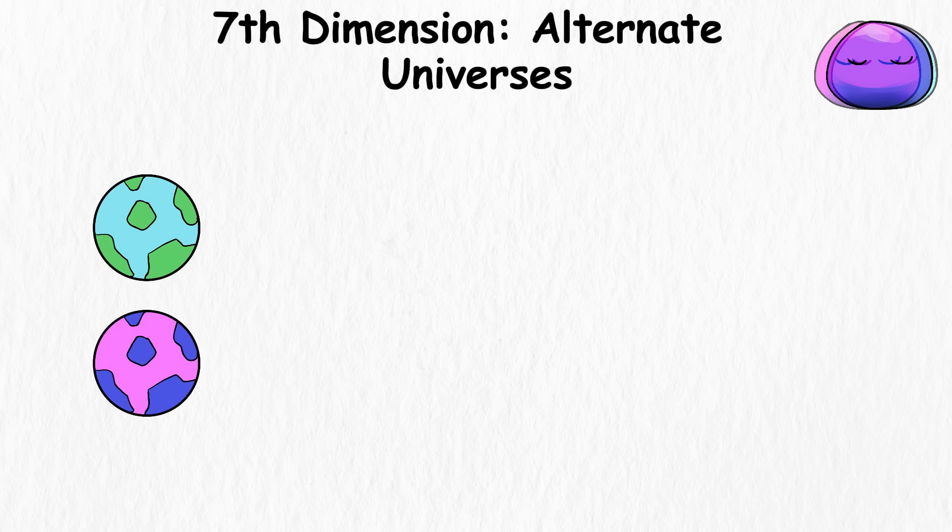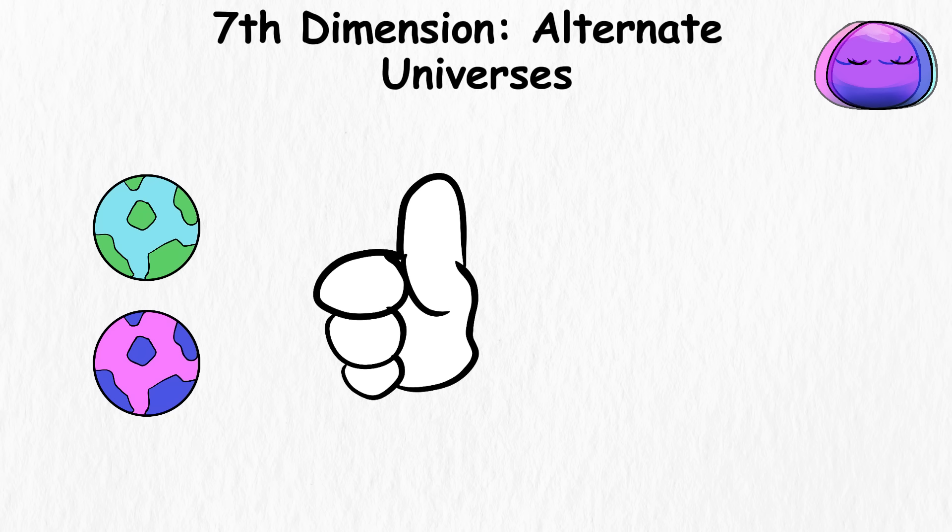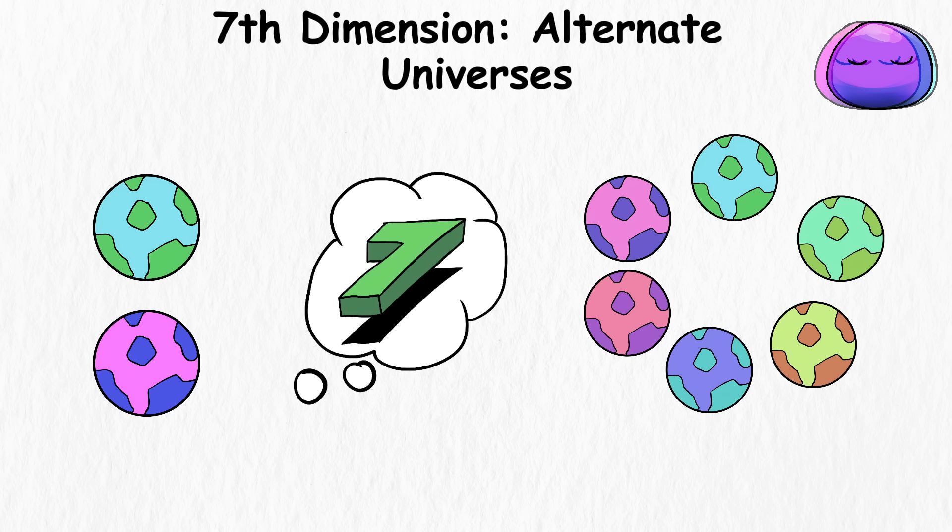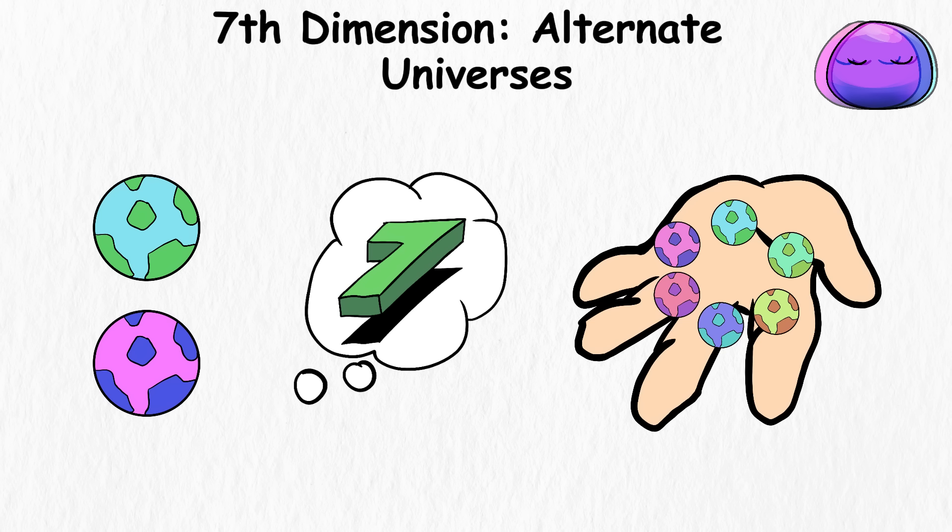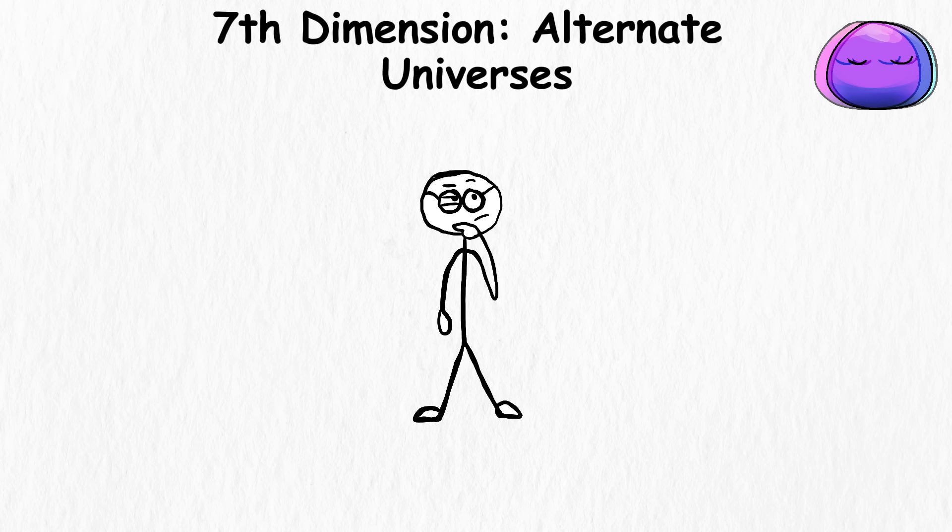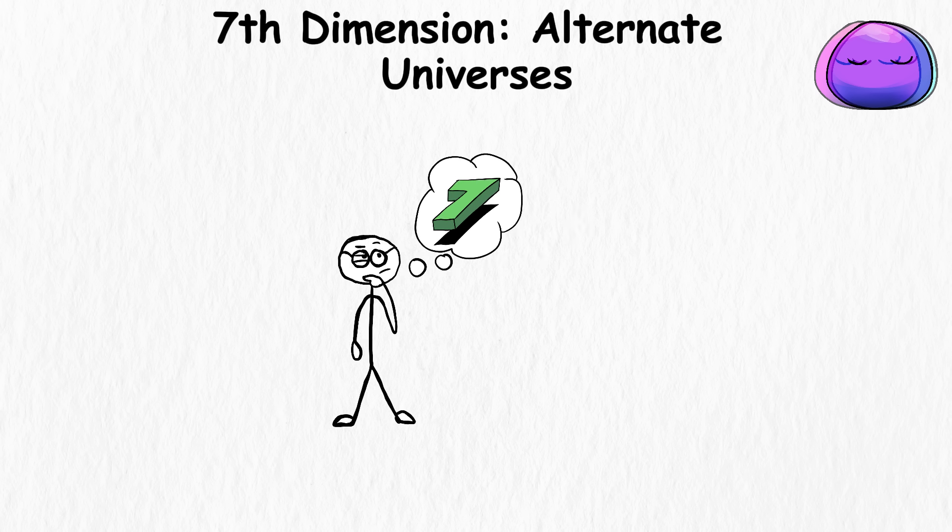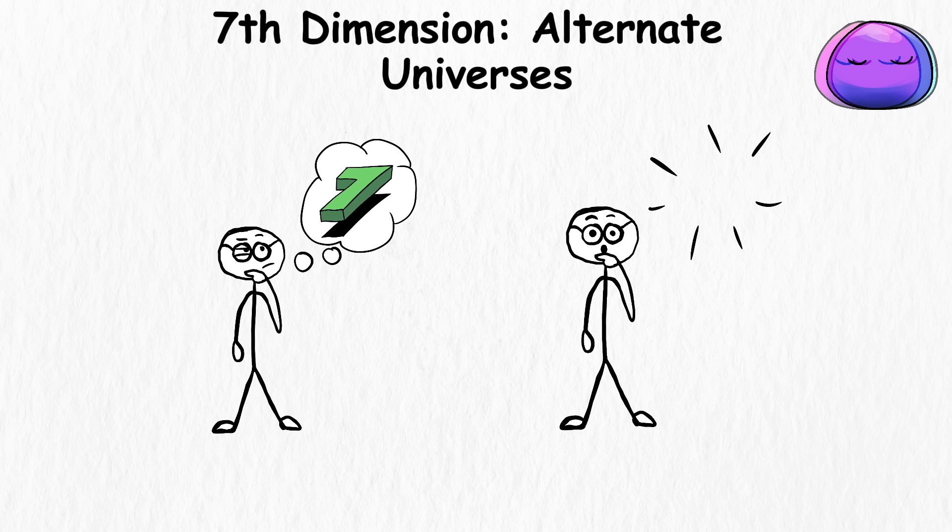Instead, these universes are entirely different, and any outcome is possible. Think of the seventh dimension as a place where all possibilities of existence can happen and are laid out in front of you in different universes. As difficult as it may be to imagine what the seventh dimension would look like, don't forget that this is completely theoretical.